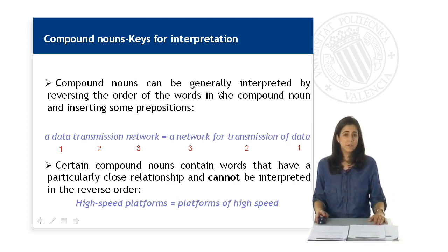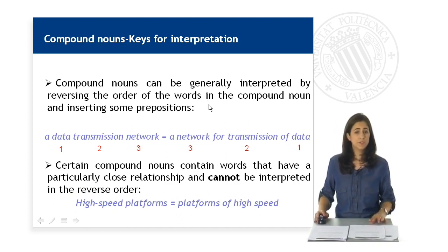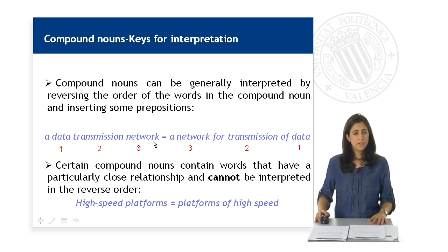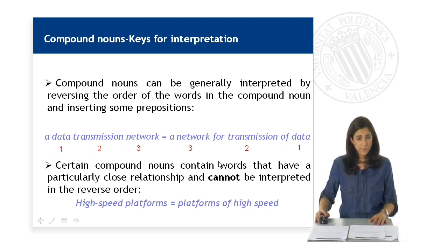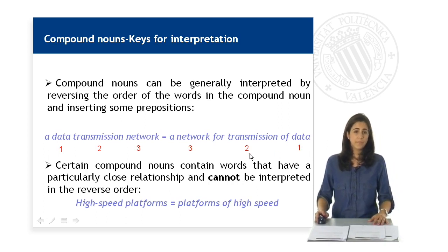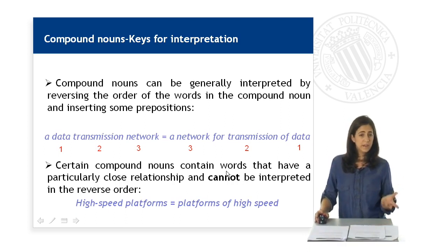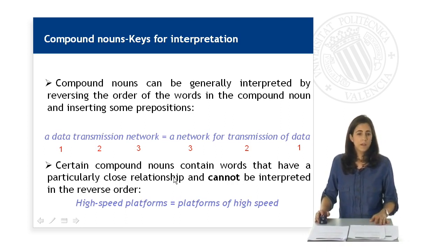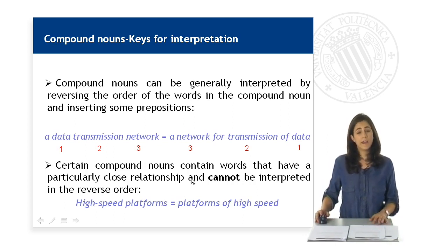To interpret compound nouns, we need to reverse the order of the words in the compound noun and insert some prepositions. For example, 'a data transmission network' — what we should do is reverse the order of the words and insert prepositions — so, a data transmission network is 'a network for transmission of data.' Please note that certain compound nouns contain words that have a particularly close relationship and cannot be interpreted in the reverse order, as in 'high-speed platforms,' which are 'platforms of high speed.'